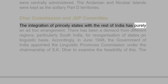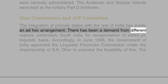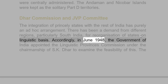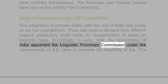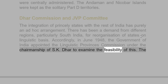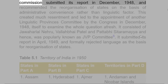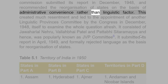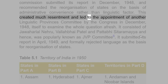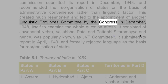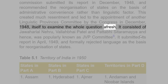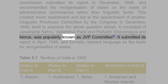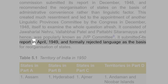The integration of princely states with the rest of India was purely an ad hoc arrangement. There was a demand from different regions, particularly South India, for reorganization of states on a linguistic basis. Accordingly, in June 1948, the Government of India appointed the Linguistic Provinces Commission under the chairmanship of S.K. Dhar to examine the feasibility of this. The Commission submitted its report in December 1948 and recommended reorganization of states on the basis of administrative convenience rather than linguistic factor. This created much resentment and led to the appointment of another Linguistic Provinces Committee by the Congress in December 1948 — the JVP Committee, consisting of Jawaharlal Nehru, Vallabhbhai Patel and Pattabhi Sitaramayya. It submitted its report in April 1949 and formally rejected language as the basis for reorganization of states.